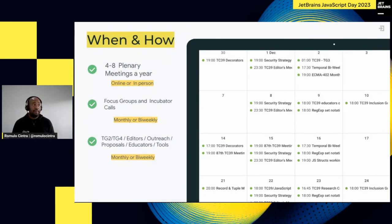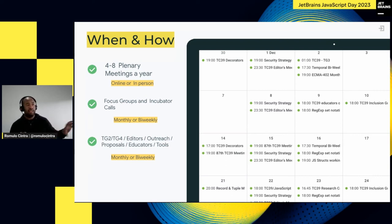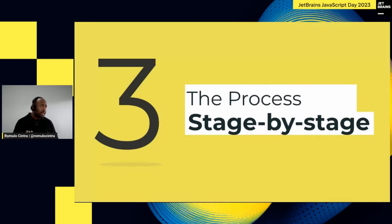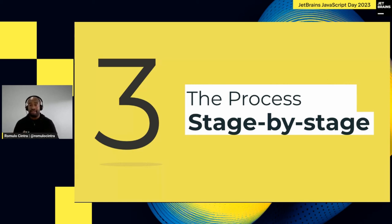TC39 normally holds between four to eight plenary meetings per year, some in person and some online. Between those sessions, there are several working groups — TG2 focused on internationalization, TG4 focused on source maps — plus editors, outreach, educators, and tools calls. Everyone interested in participating in those groups can join. I'll share links at the end so all of you can participate, give feedback to the language, and help build it.